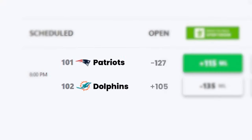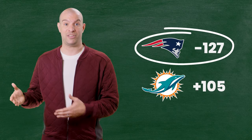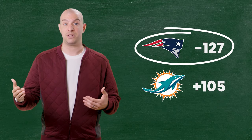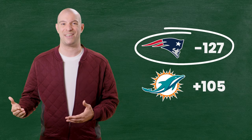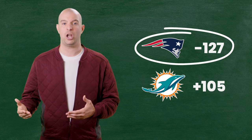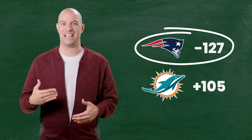Reading the odds will also tell you which team is favored. I'm going to use an example from the Action Network website — the Miami Dolphins and the New England Patriots playing each other week one. The minus 127 next to the Patriots means that they are favored. It means you have to bet $127 in order to win $100. You're betting more to win less, because they're favored.